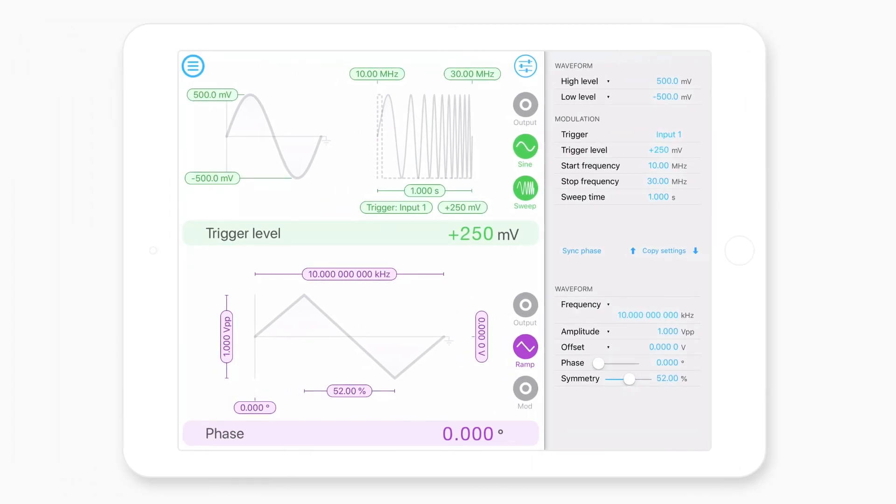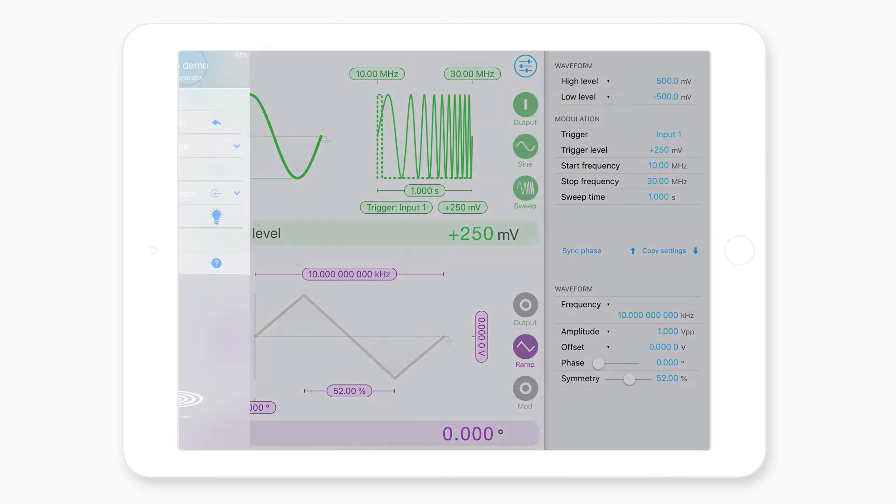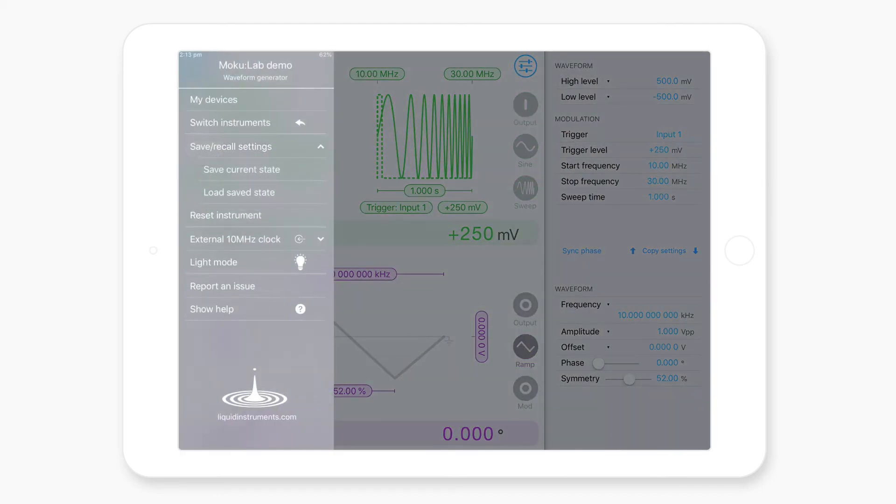The last thing to show you is the ability to save and recall settings for the waveform generator instrument. Let's say that you wanted to configure the instrument in a particular way, and then play around with different settings, but then we have the ability to quickly return to a saved state. What you can do is access the main menu at the top left, select the save and recall settings menu, and save the current state.